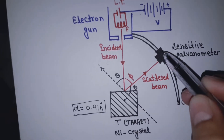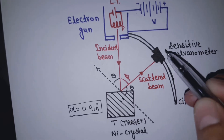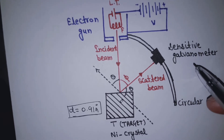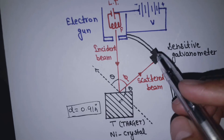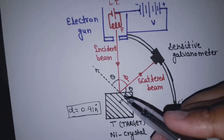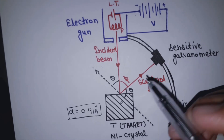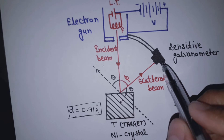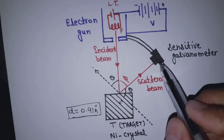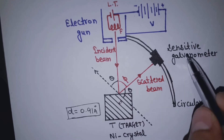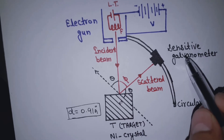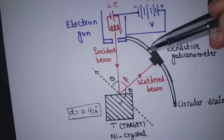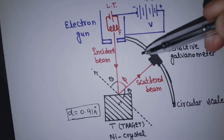We have placed a collector connected to a sensitive galvanometer here. The galvanometer detects the current. The current indicates the number of electrons entering the collector — the more electrons that reach it, the higher the current. The galvanometer is on a circular scale.